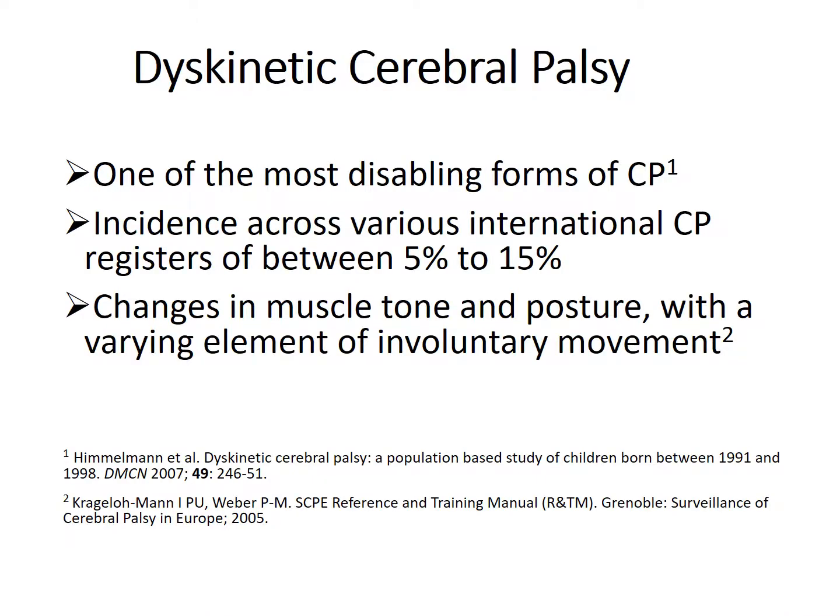Dyskinetic CP is one of the most disabling forms of CP, with a reported incidence across various international registers of between 5 and 15%. It's a motor disorder characterised by changes in muscle tone and posture with a varying element of involuntary movement.